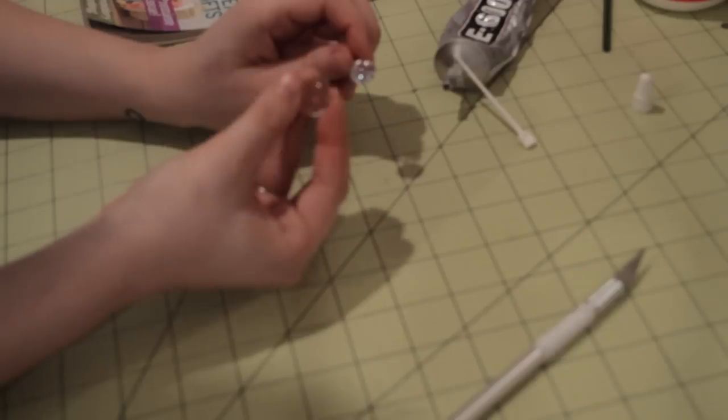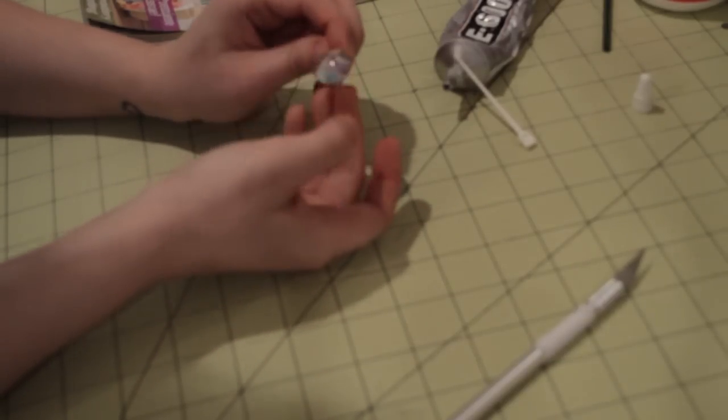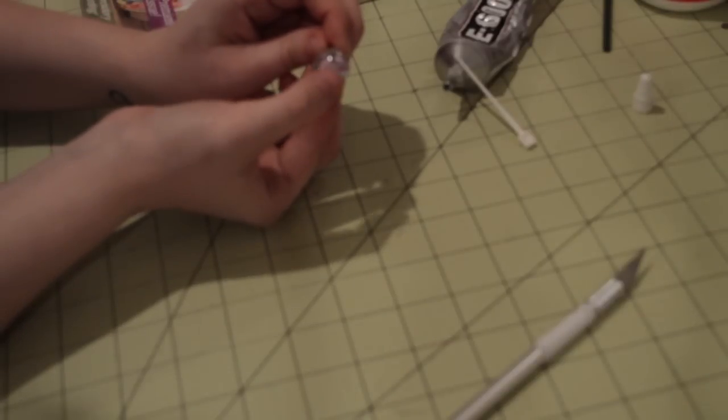Next, take your gem, make sure you're using the flat side, and place directly on top. Put some pressure to get rid of any air bubbles.